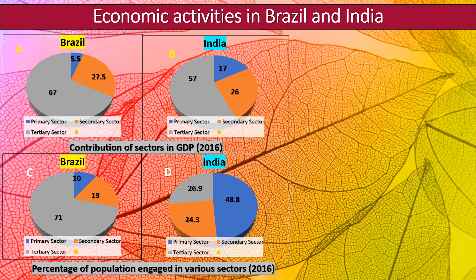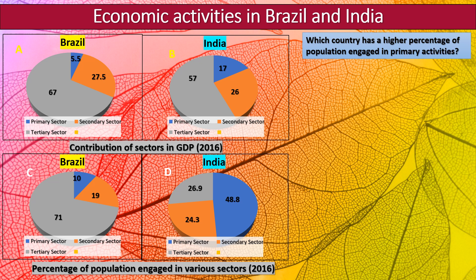The first question is: which country has a higher percentage of population engaged in primary activities? In Brazil, only 10% of the population is engaged in primary occupations, whereas in India, 48.8% of the population is engaged in primary activities. Using the index, the primary sector is colored in blue.